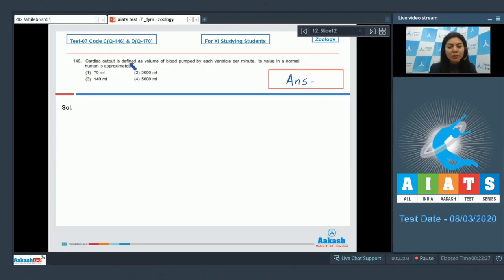Question 146: Cardiac output is defined as volume of blood pumped by each ventricle per minute. Its value in a normal human is approximately 70 ml, 3000 ml, 140 ml, or 5000 ml.